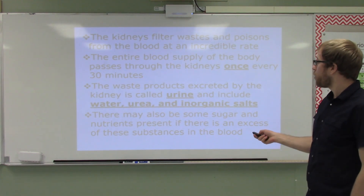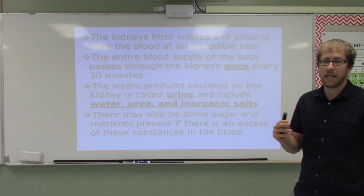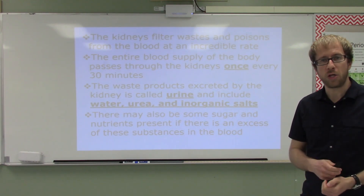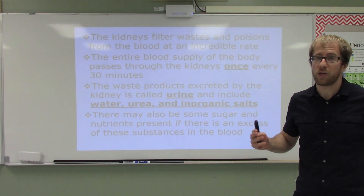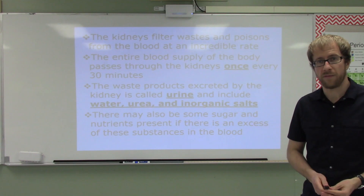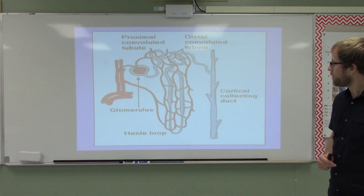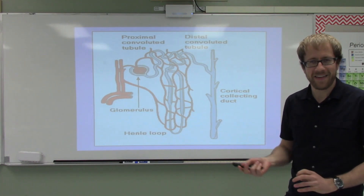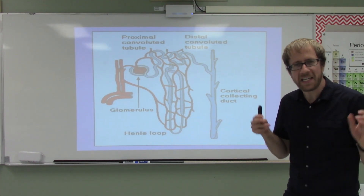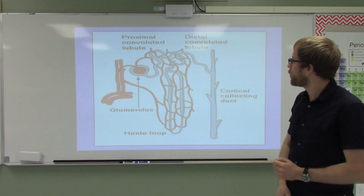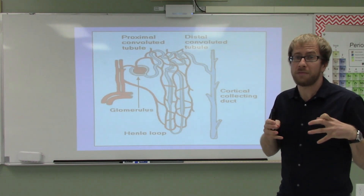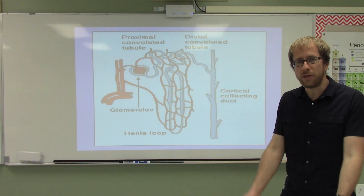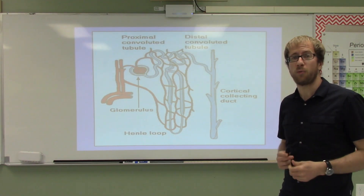What does urine mainly consist of? That is going to be mainly water, urea, and inorganic salts. Other substances and certain nutrients can be found in the urine — it can be a sign of illness, or maybe you just ingested far too much of that nutrient and your body's getting rid of it, like sugar for example. This nephron here is going to be the focus of the remainder of the unit — this is the functional unit of the kidney. This is actually how it filters things from your blood and how it reabsorbs a lot of the stuff that it filters out, because the filtering process is pretty indiscriminate. So we do need to reabsorb a lot of the stuff that finds its way into our nephrons, and that's why we have this exceptionally complex structure.